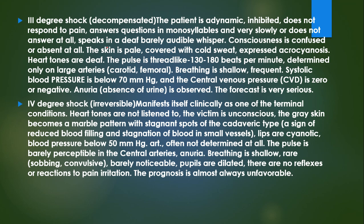Third degree shock — decompensated: the patient is adynamic and inhibited, does not respond to pain, answers questions in monosyllables very slowly or not at all, speaks in a barely audible whisper. Consciousness is inhibited or lost. Skin is pale and covered with cold sweat with acrocyanosis. Heart tones are deep. Pulse is thread-like at 140-180 beats per minute, detected only on large arteries such as the carotid or femoral. Breathing is very frequent. Systolic blood pressure below 70 mmHg. Central venous pressure is zero or negative. Anuria is present. Prognosis is very serious.